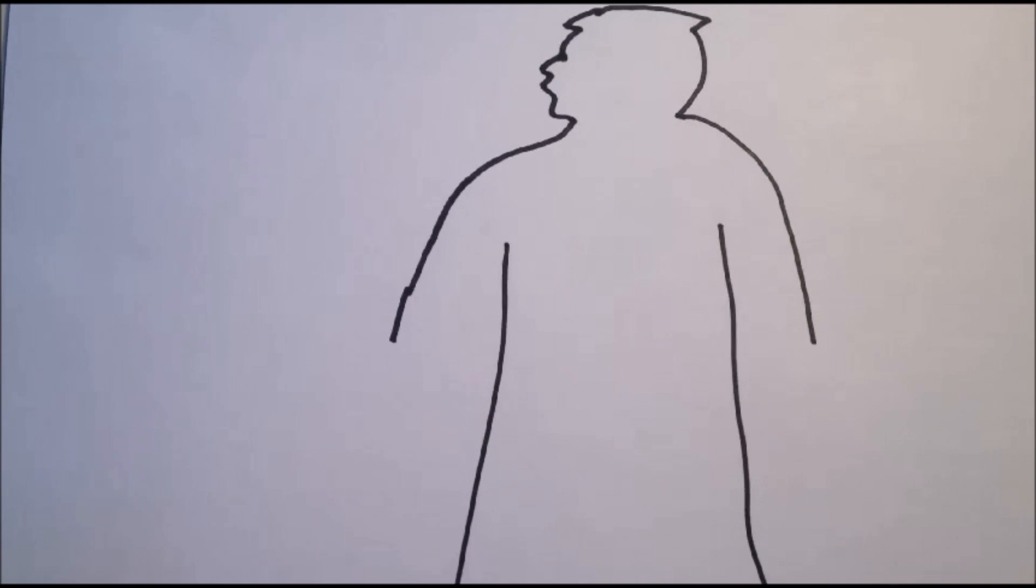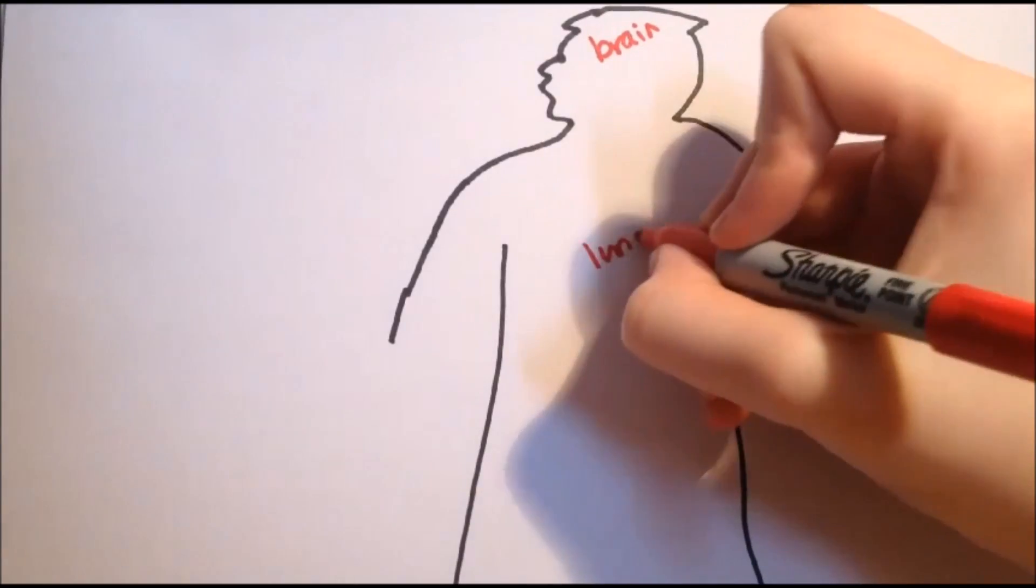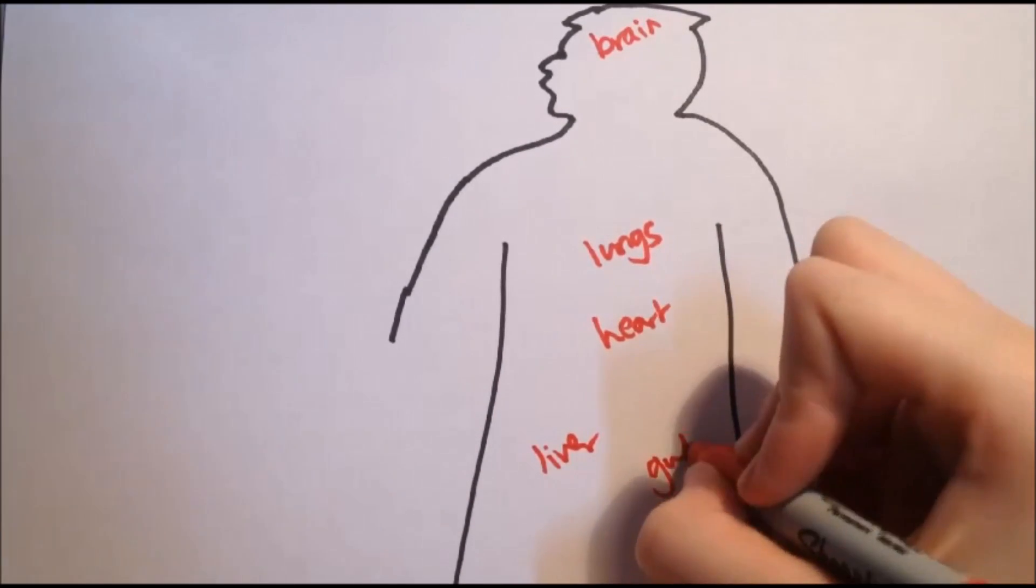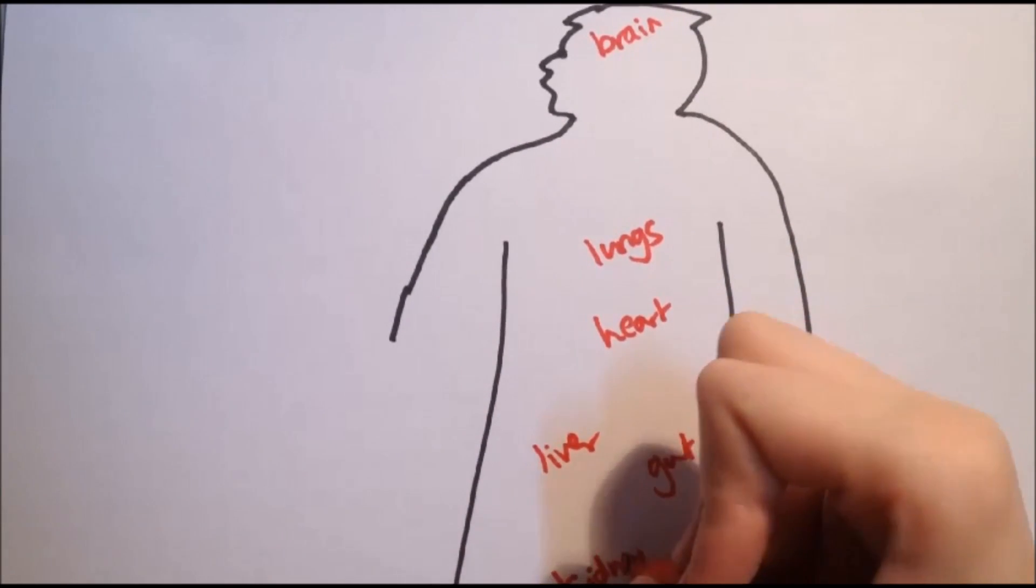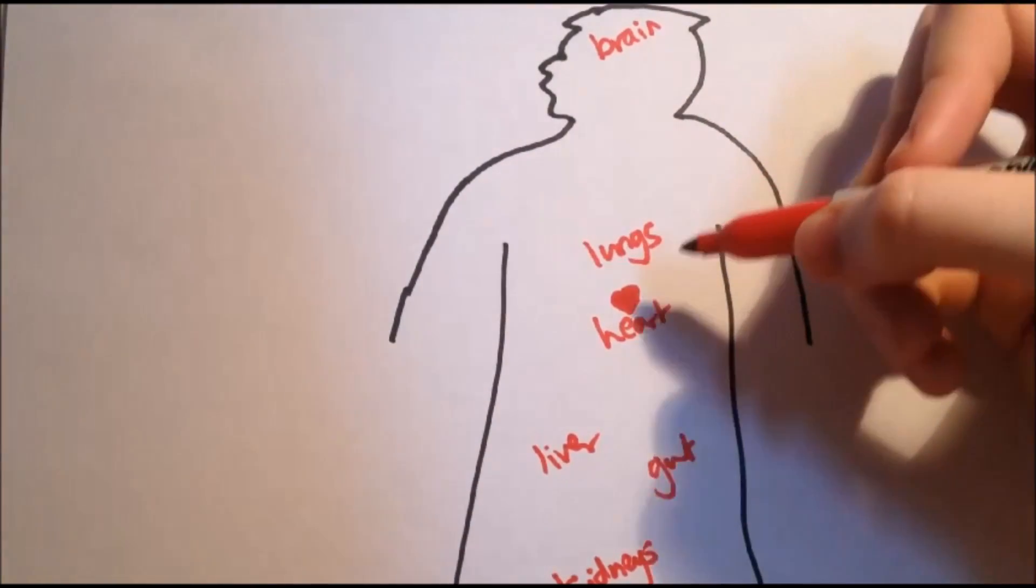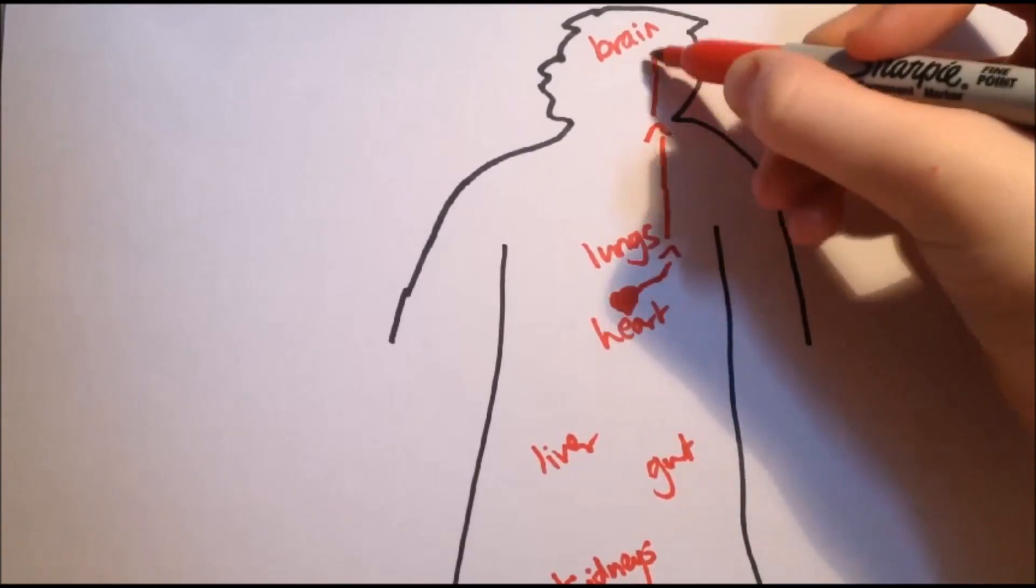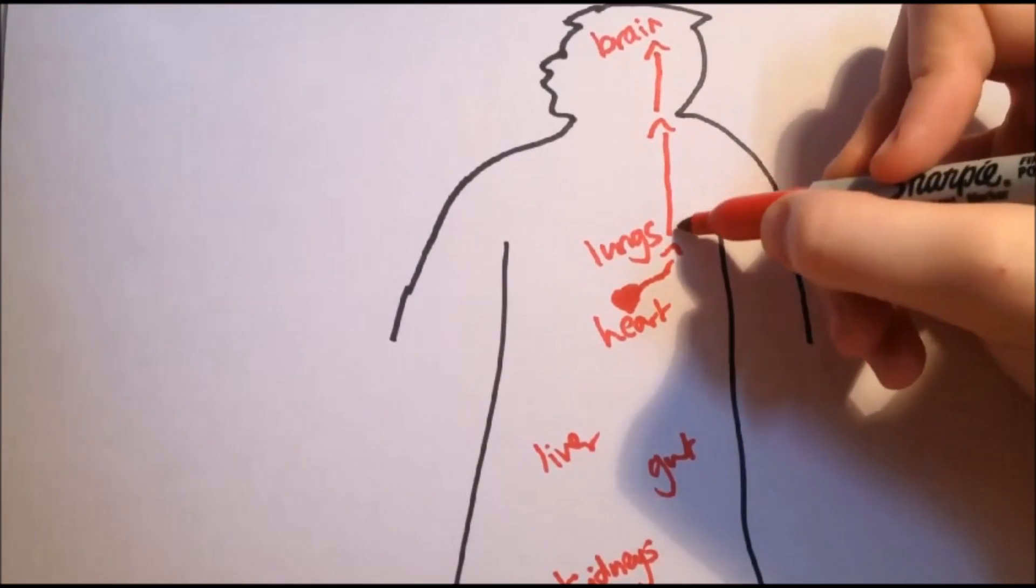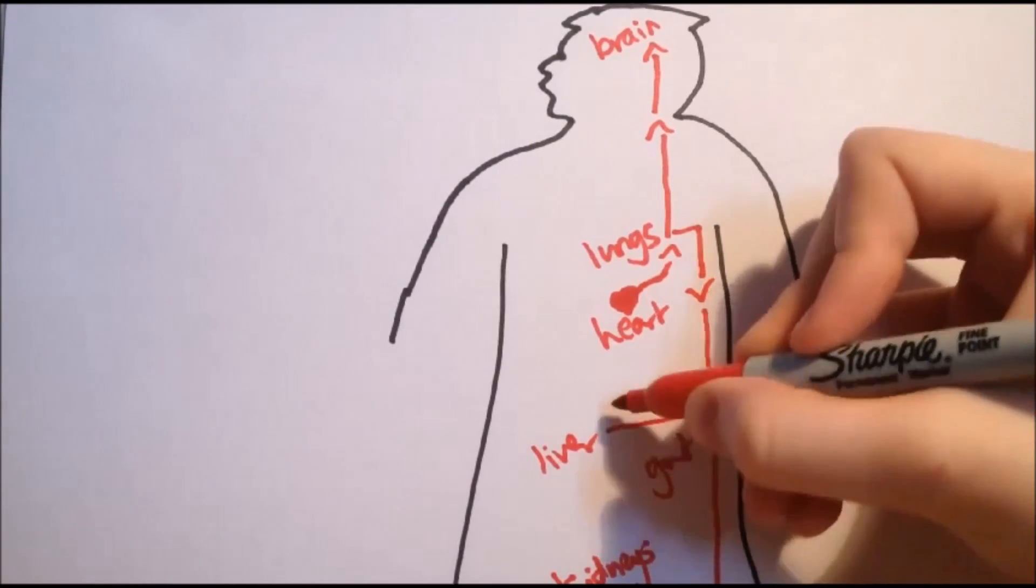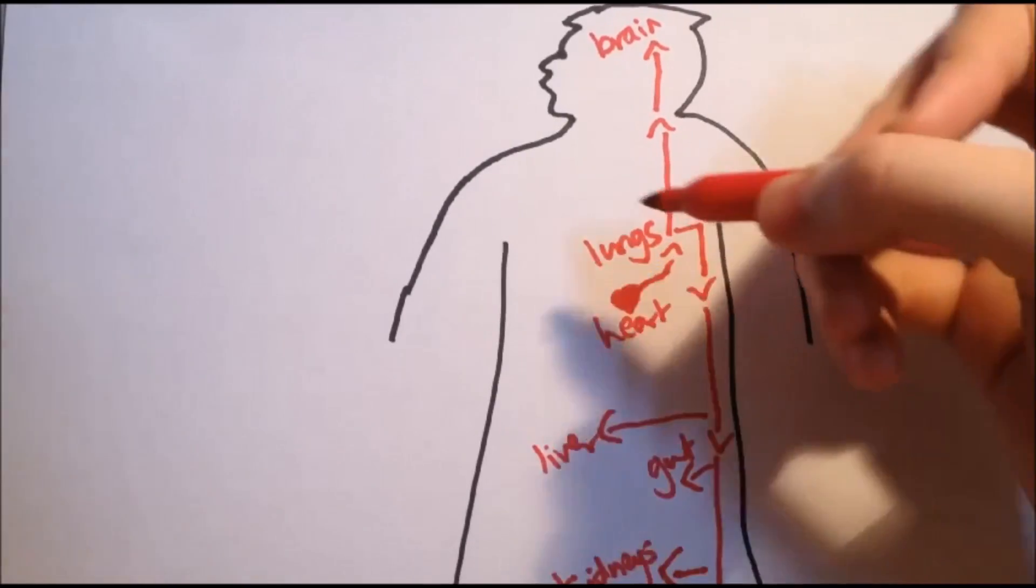Next, we're going to be talking about blood. Blood is pumped around the body when it's under pressure. Here you have the brain, the lungs, the heart, the liver, the gut, and the kidneys. Blood is pumped around the body by the contractions of the heart, which increase the pressure. It comes from the red side, which is arteries. The blood leaves the heart and travels up to the brain, down all the way to the lower limbs, and to the liver, gut, and kidneys.